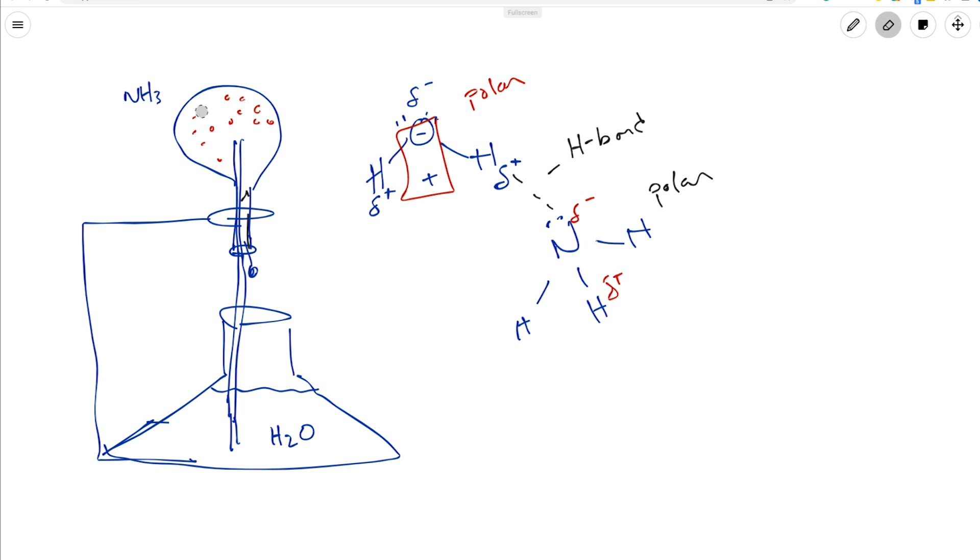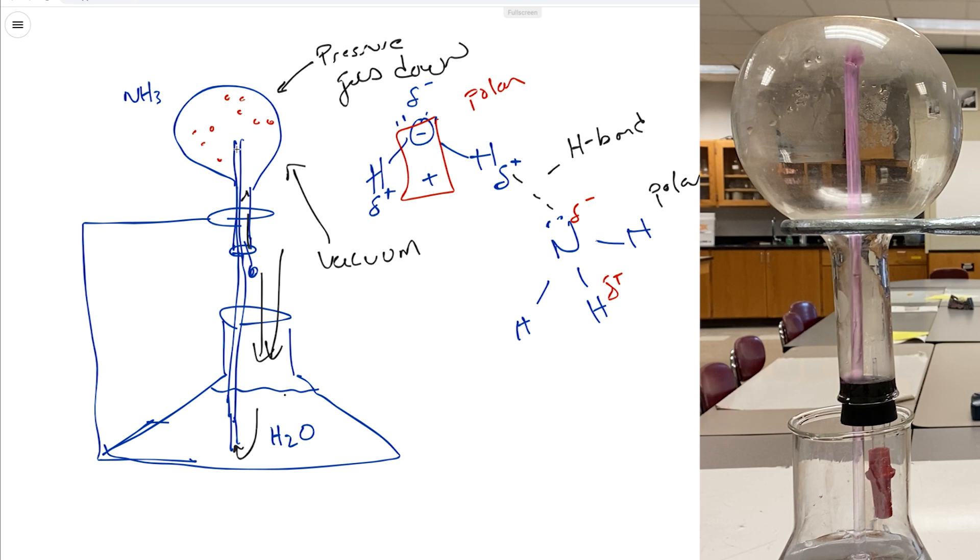And when they start disappearing, what happens is the pressure in the flask goes down, which is creating a vacuum up here. And when we have a vacuum, what can happen is that the air pressure that's pushing down on the water can push up the tube and into the flask, and it makes the ammonia fountain. And you might have noticed in the video, it got very, very fast once it reached the top.